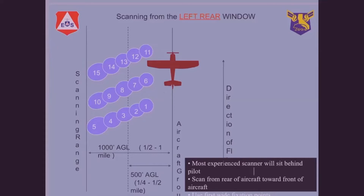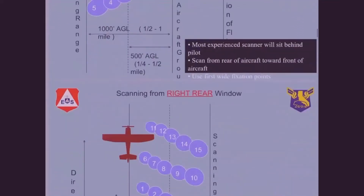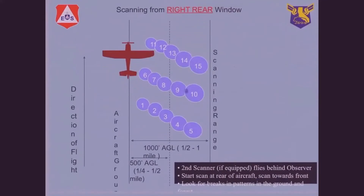The most experienced scanner should sit behind the pilot, because the pilot isn't scanning — he's working hard on keeping that airplane going right down that track and flying accurately to put the scanners in a position to cover the terrain methodically. If the pilot is all over the place, the scanners are going to miss certain areas and we won't get the same coverage we're looking for. From the right rear it's a similar thing — diagonal, with a bigger field of view as you approach the scanning range. So you spend more time out there, less time in close.